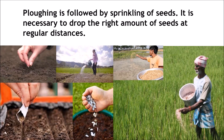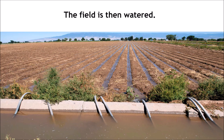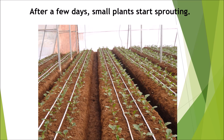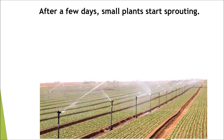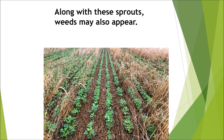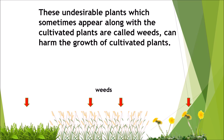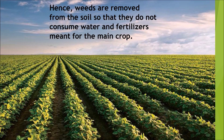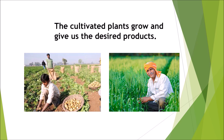It is necessary to drop the right amount of seeds at regular distances. The field is then watered. After a few days, small plants start sprouting. Along with these sprouts, weeds may also appear in the fields. These undesirable plants which sometimes appear along with the cultivated plants are the weeds, and they can harm the growth of cultivated plants. Hence, they are removed from the soil so that they do not consume water and fertilizers which are meant for the main crop. The cultivated plants grow and give us the desired products.